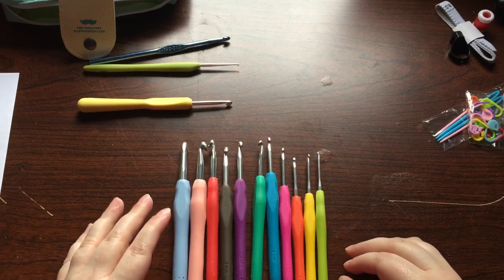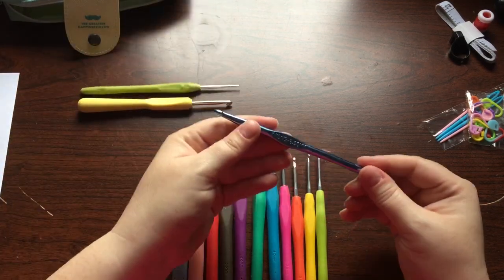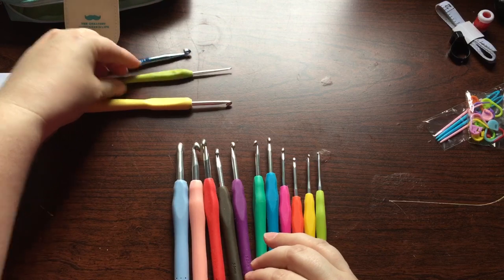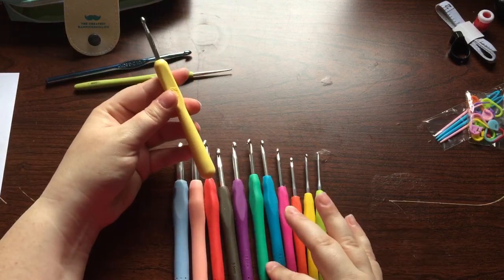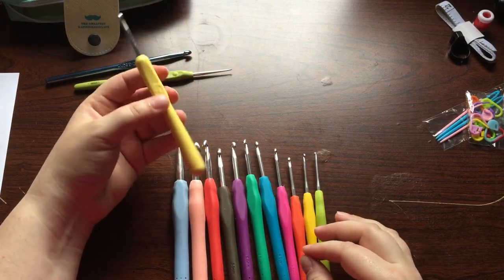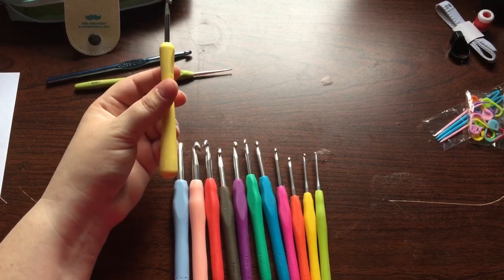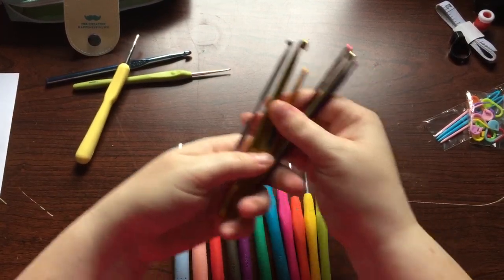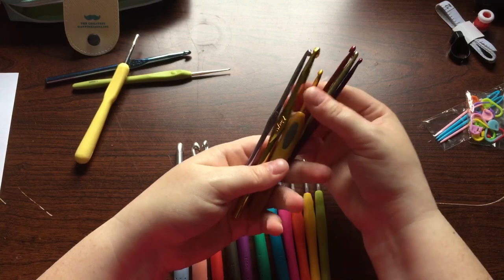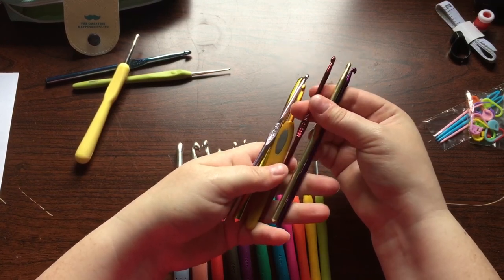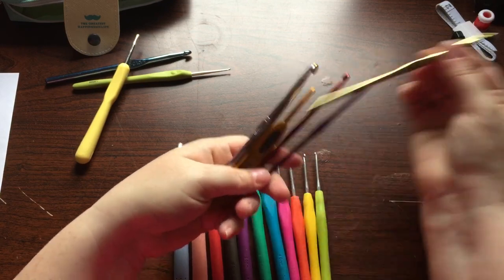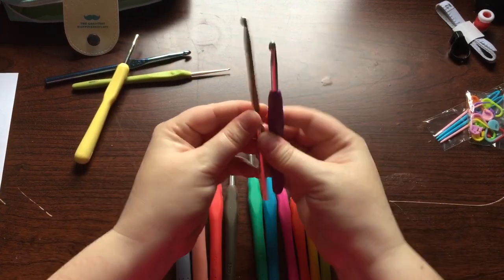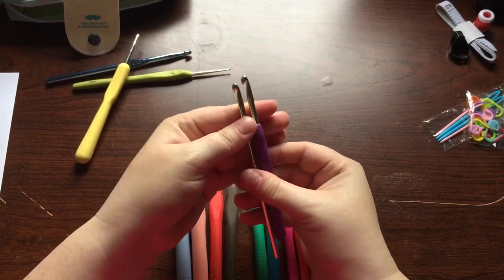So the crochet hook that I want to compare sizes with, I think it was the 4.25, well sugar, I did not get one the right size. We'll compare the five millimeters to it. That's a fairly average hook size.